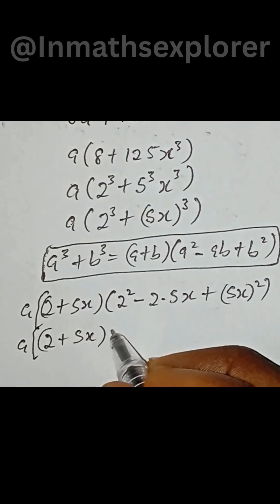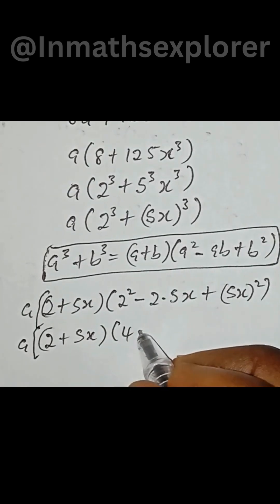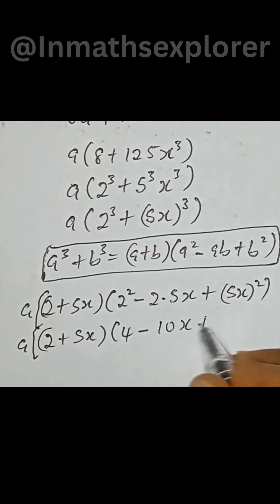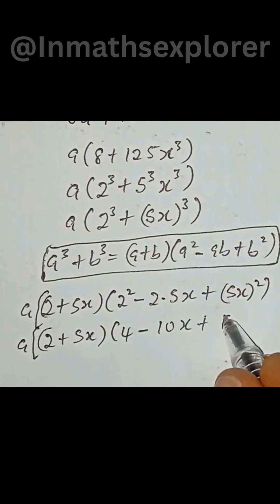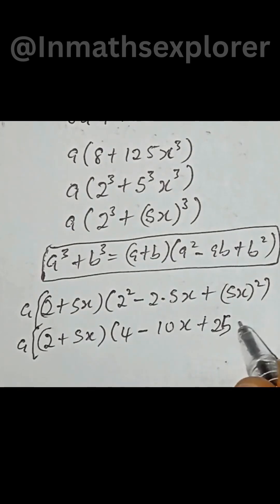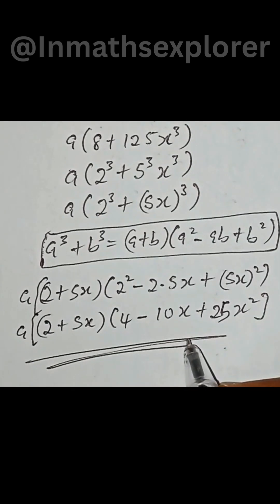Then a out we have 4, 2 to the power of 2, 4 minus 10x plus, we have 5 to the power of 2, we have 25, 25x squared and that would be our factorization.